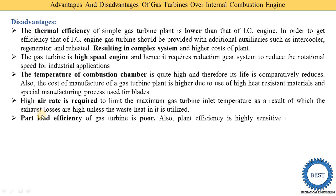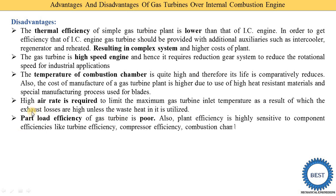Part-load efficiency of the gas turbine is poor. If the plant capacity is 100 MW but it is run below that — say at 90, 80, or 70 MW — efficiency is reduced. Additionally, plant efficiency is highly sensitive to component efficiencies, including turbine efficiency, compressor efficiency, and combustion chamber efficiency.